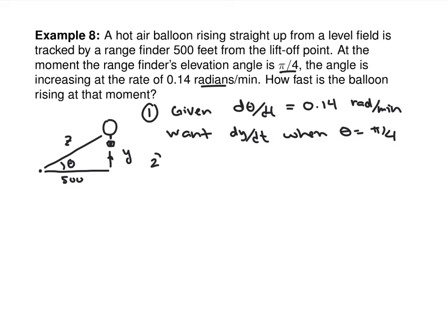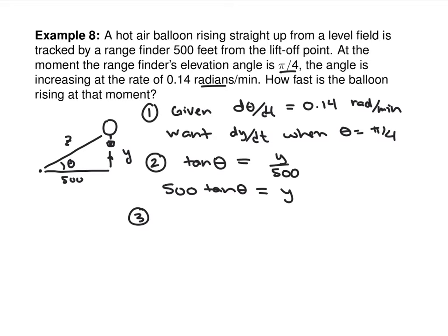You have options — use the trig function that relates Y and 500, the side that has a constant. That's tangent: tan(theta) equals Y over 500. Multiply through so there's no fraction: 500 tan(theta) equals Y. Now take the derivative: 500 times secant squared theta times d theta/dt equals dy/dt.